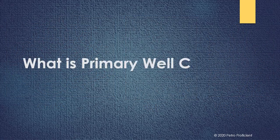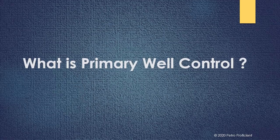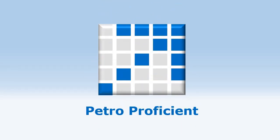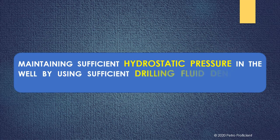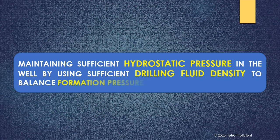What is primary well control? Primary well control is maintaining sufficient hydrostatic pressure in the well by using sufficient drilling fluid density to balance formation pressure.